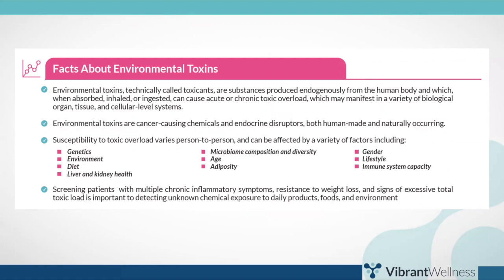Environmental Toxins, technically called toxicants, are substances produced endogenously from the human body and which, when absorbed, inhaled, or ingested, can cause acute or chronic toxic overloads, which may manifest in a variety of biological, organ, tissue, and cellular-level systems. Environmental Toxins are known to be cancer-causing chemicals and endocrine disruptors. Susceptibility to toxic overload varies from person to person. Screening patients with multiple chronic inflammatory symptoms, resistance to weight loss, and signs of excessive total toxic load is important to detecting unknown chemical exposure to daily products, foods, and environments.